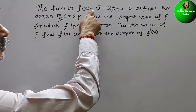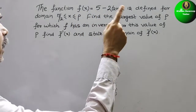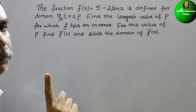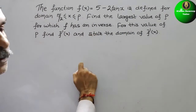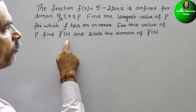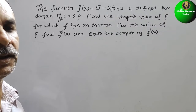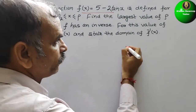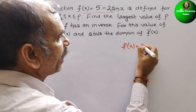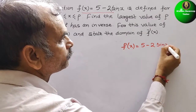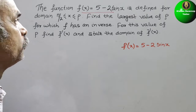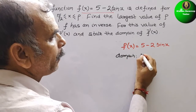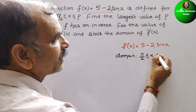The function f(x) = 5 - 2sin(x) is defined for the domain π/2 ≤ x ≤ p. Find the largest value of p for which f has an inverse. For this value of p, find f inverse of x and state the domain of f inverse x.